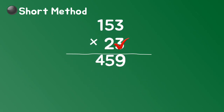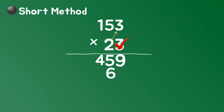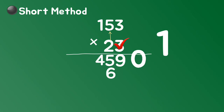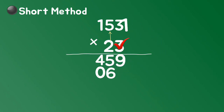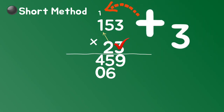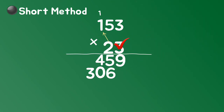Next: 2 times 3. 2 times 5 is 10. Regroup — carry 1 to the next number. And 2 times 1 is 2, plus 1 is 3. Tenth place — done.